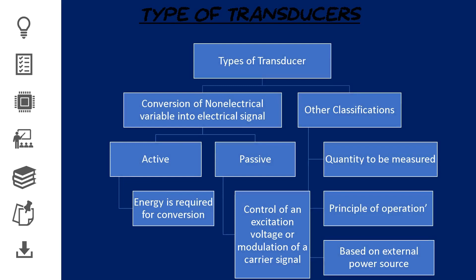These two principles are active and passive. Active transducers don't need external energy to convert one form of energy into another — this topic will be covered in depth in the next video. Passive transducers require energy to convert one form of energy into another. Transducers can also be classified based on the quantity to be measured, principles of operation, and based on external power sources. However, not all principles are of practical importance in the design of actual transducers.